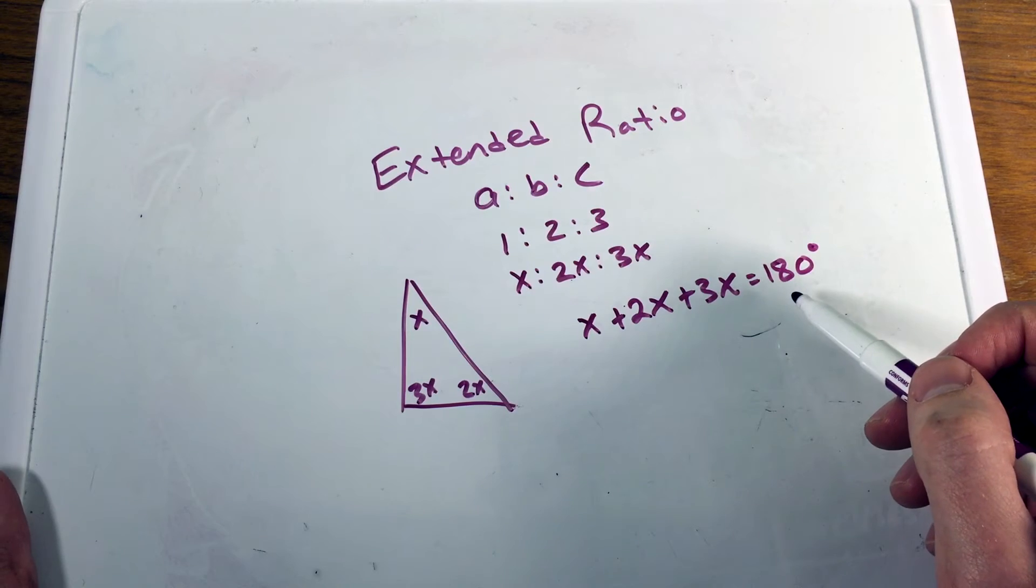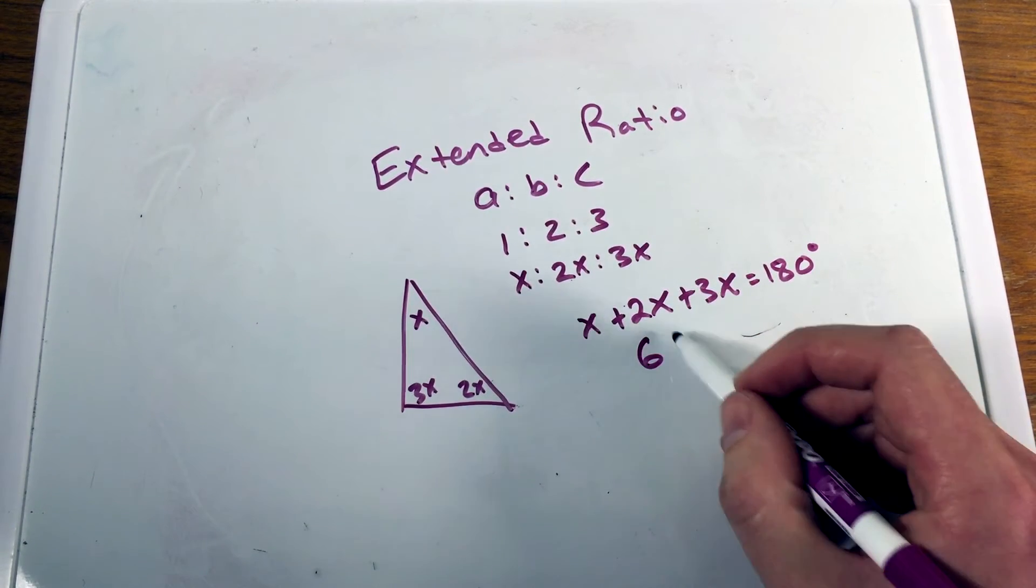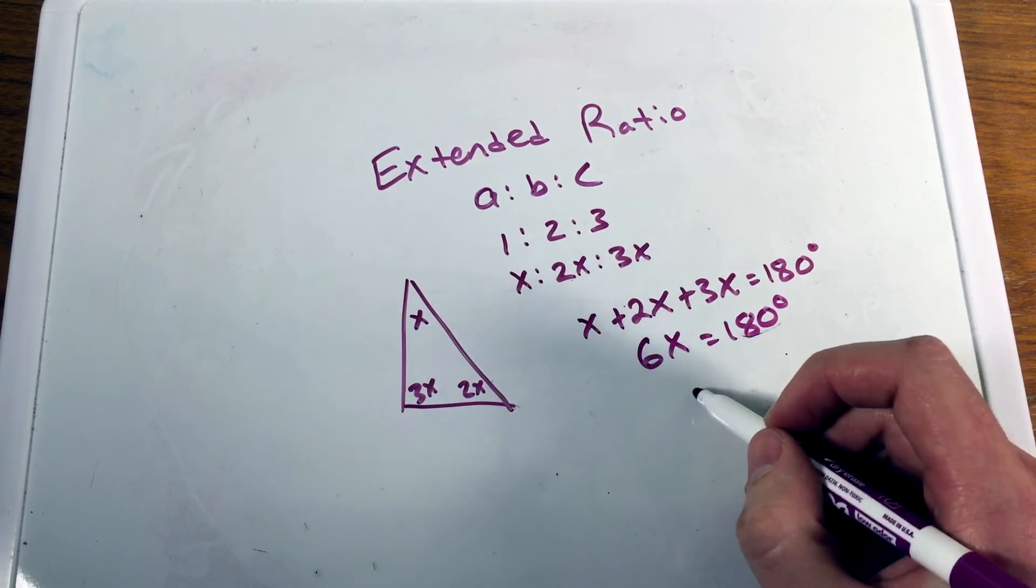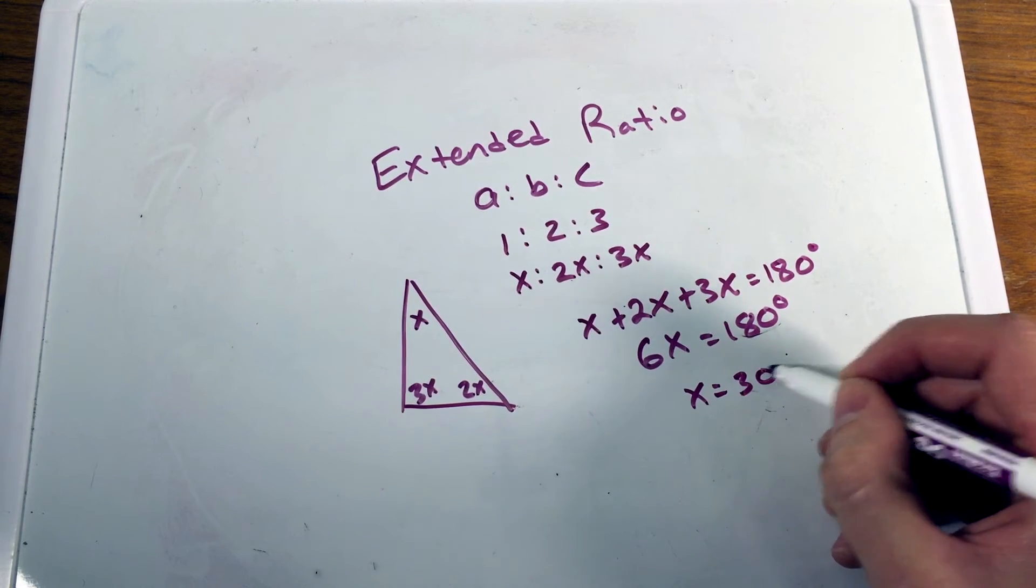I'm adding the interior angles of a triangle up. And so these combined up here, X plus two X plus three X ends up being six X equals 180 degrees. Divide by six, we get X equals 30 degrees.